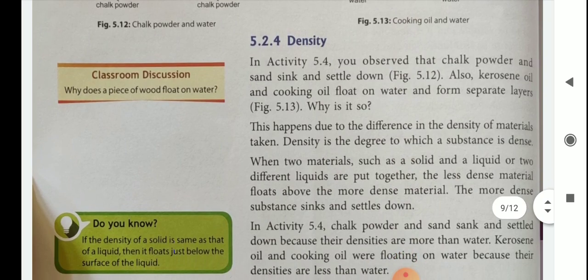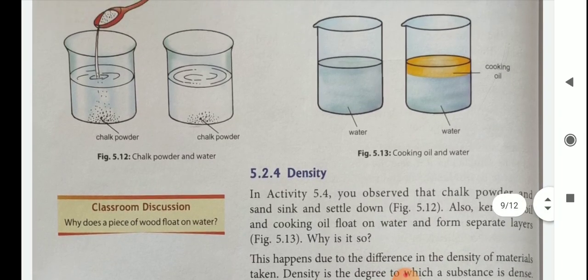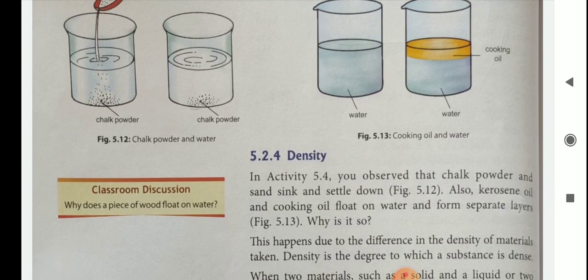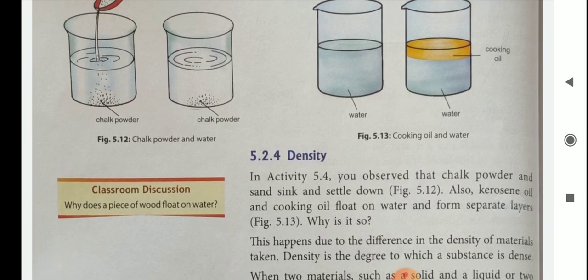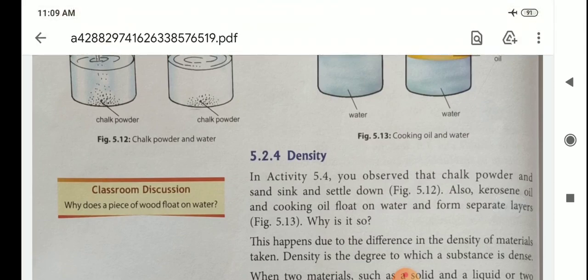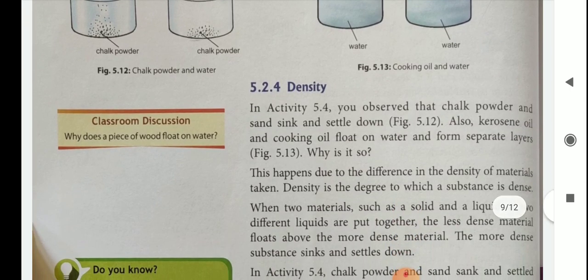The next property is density. Consider this experiment: chalk powder and water, and cooking oil and water. Chalk powder can be seen at the bottom part, while oil is on the upper part of the water. We observe that chalk powder and sand sink and settle down, while kerosene oil and cooking oil float on water and form separate layers.